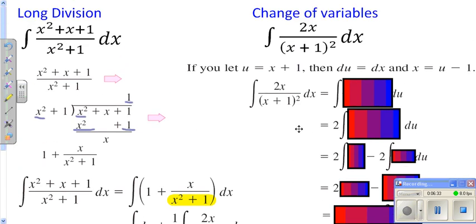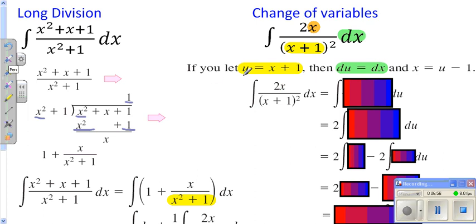When we take a look at this one over here, we're going to let u equal just what's inside the parentheses on the bottom. In that case, du would be dx. We have a dx showing up, but you'll notice on top we have an x showing up — and there's no x in our u expression. So really what you have to do is go ahead and solve the u equation for x. When you solve for x, you get x equals u minus 1. So when you rewrite this, you're going to replace your x on top with u minus 1.